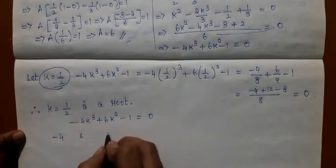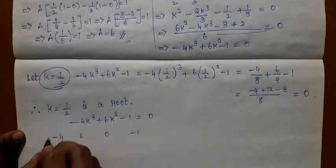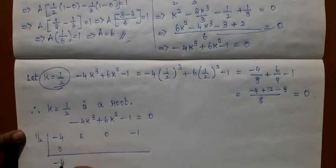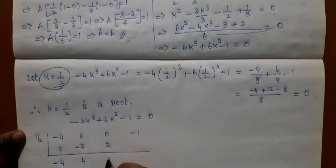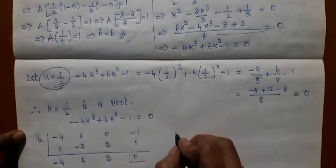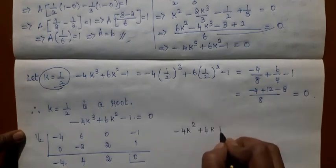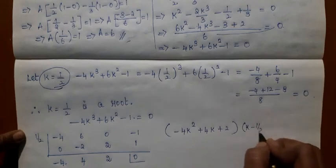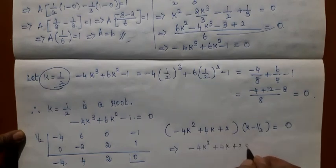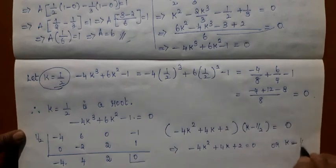Using synthetic division on minus 4K cubed plus 6K squared plus 0·K minus 1, dividing by (K minus 1/2): bring down minus 4; multiply by 1/2 to get minus 2; 6 minus 2 is 4; multiply by 1/2 to get 2; 0 plus 2 is 2; multiply by 1/2 to get 1; minus 1 plus 1 is 0. So the cubic factors as (minus 4K squared plus 4K plus 2) times (K minus 1/2) equals 0.